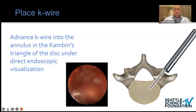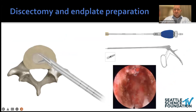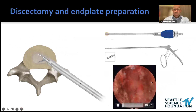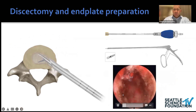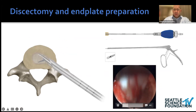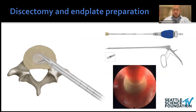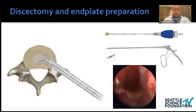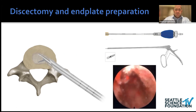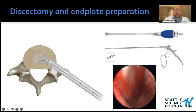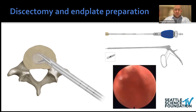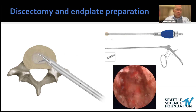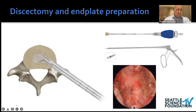Then you do the discectomy — there are a lot of tools for that, and I'd encourage anyone interested to look at the different companies. Here's the endplate preparation you can see at the end of the case — the quality is quite nice. You can take off cartilage, drill a little, and get a very nice complete exposure of the endplate. The first time you see it, I'd encourage any open or MIS surgeon to do this — you can see how much cartilage is left even when the rasp feels okay. It's a very humbling step.